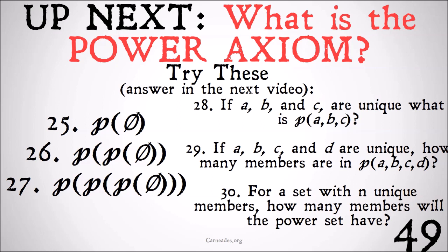And here are three more. If a, b, and c are unique, what is the power set of {a, b, c}? If a, b, c, and d are unique, how many members are in the power set of {a, b, c, d}? And for any set with n unique members, how many members will the power set of that set have? Give those a try. The answers are going to be in the next video.